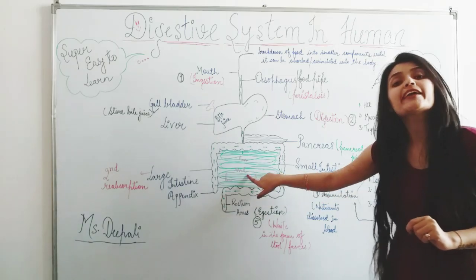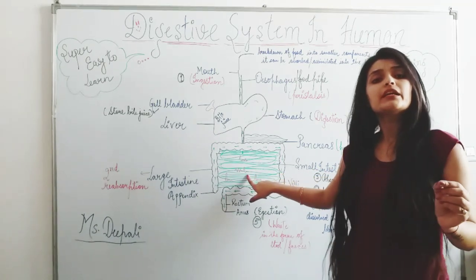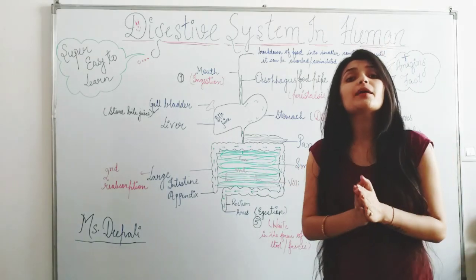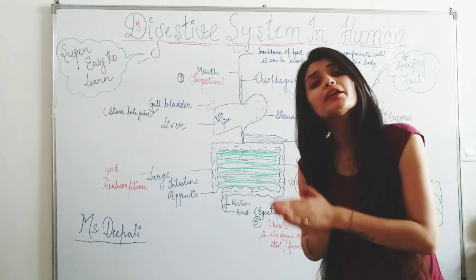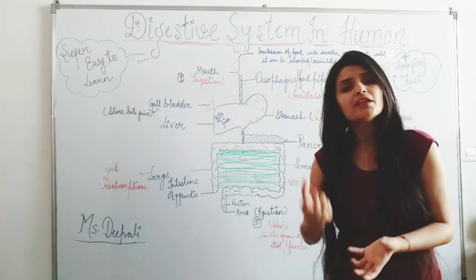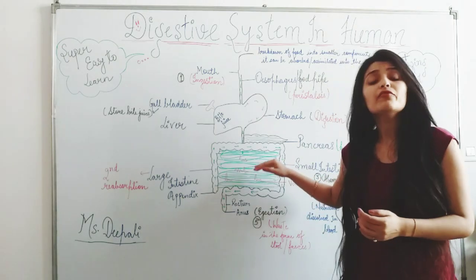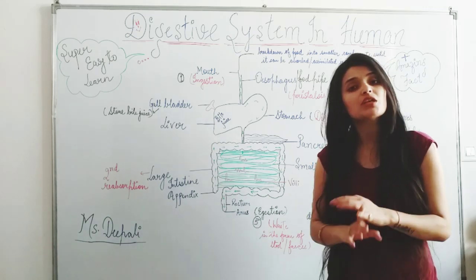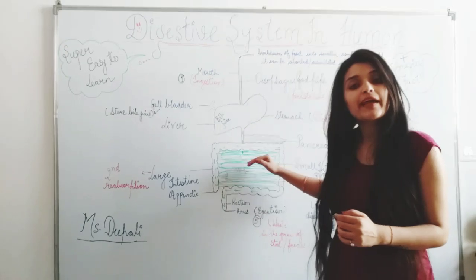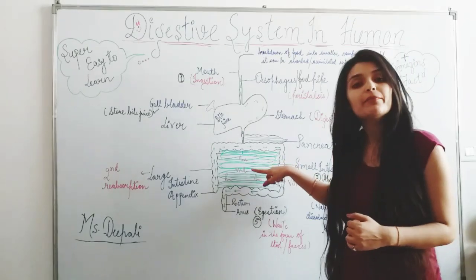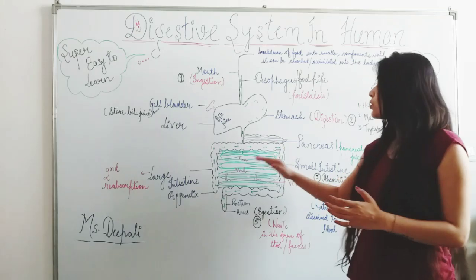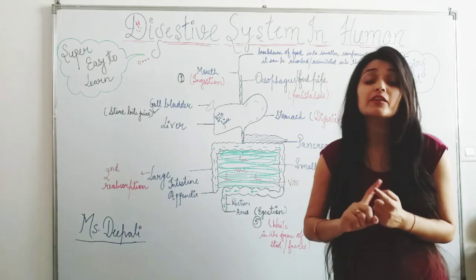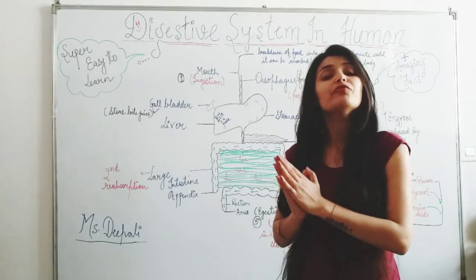In the small intestine there are finger-like structures called villi. Just like a sponge absorbs water, these villi absorb carbohydrates, proteins, and fats from the digested food. It is an amazing fact that the small intestine is so compact that its size is 8 to 8.5 meters. The liver and pancreas complete their work here in the small intestine.